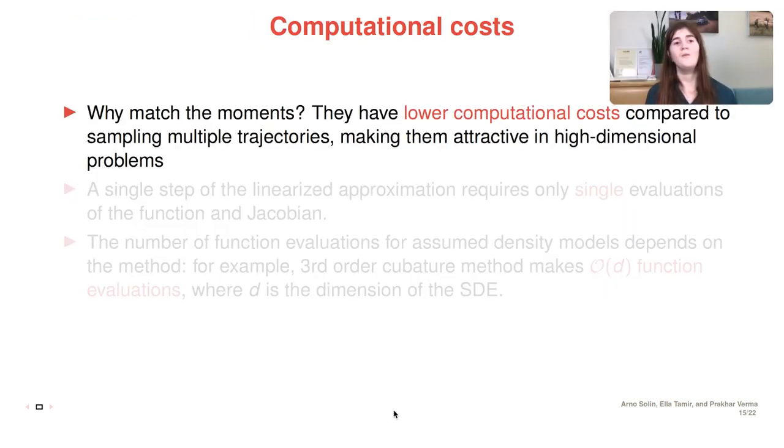So why consider weak solution concepts? They have lower computational costs compared to sampling methods, especially in high dimensional problems, because in high dimensions it's common to need multiple trajectories to represent the distribution well, meaning that you need more computational time.